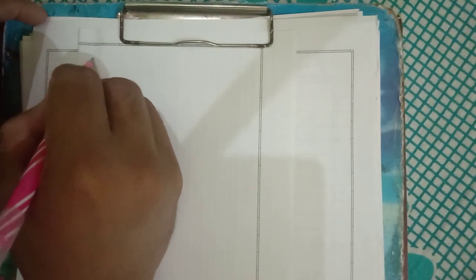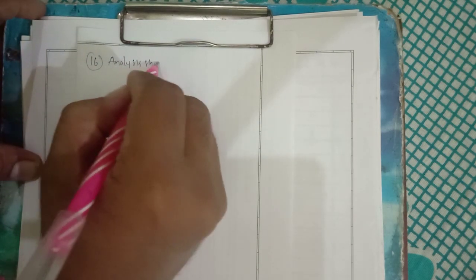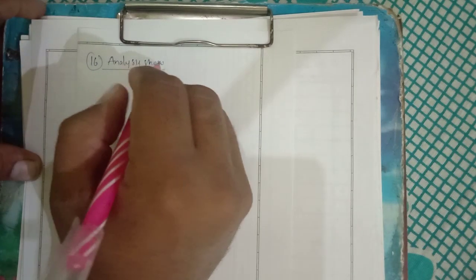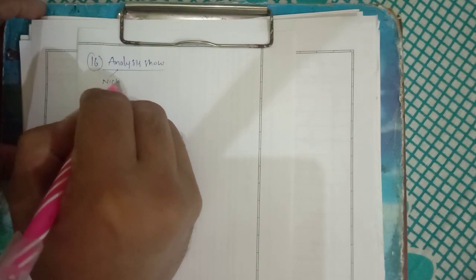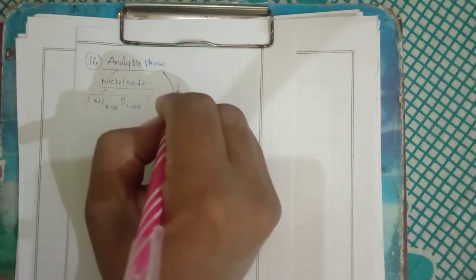Hello everyone, let's see question number 16. Analysis shows that nickel oxide has a formula Ni₀.₉₈O₁.₀₀. What fraction of nickel exists as Ni²⁺ and Ni³⁺ ions?